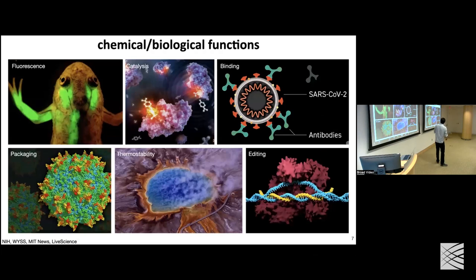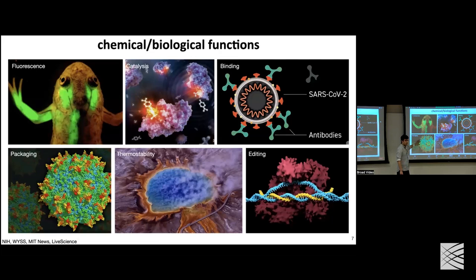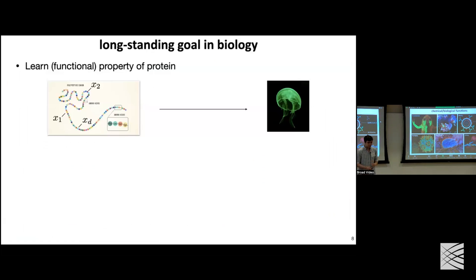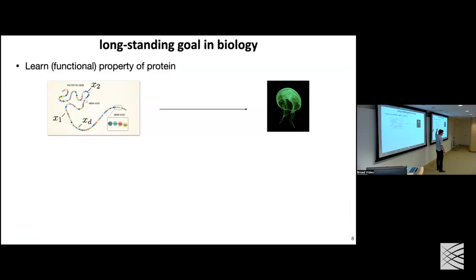There are many interesting functionalities of proteins. People are using enzymes and proteins to recycle plastics, to reduce CO2 from the environment, and to develop therapeutics. Proteins are also used in CRISPR applications and to deliver drugs as cargo. What is shared among all these applications is the big long-lasting question in biology: how can we map the functional properties of a protein to its sequence?